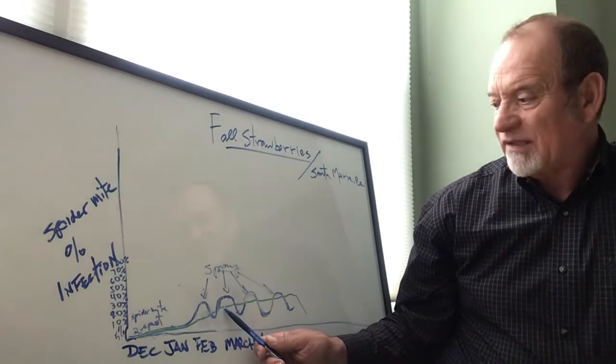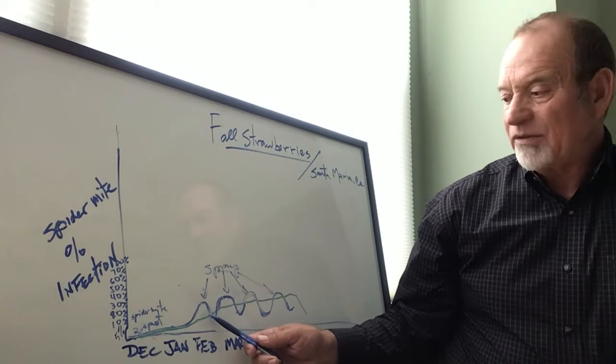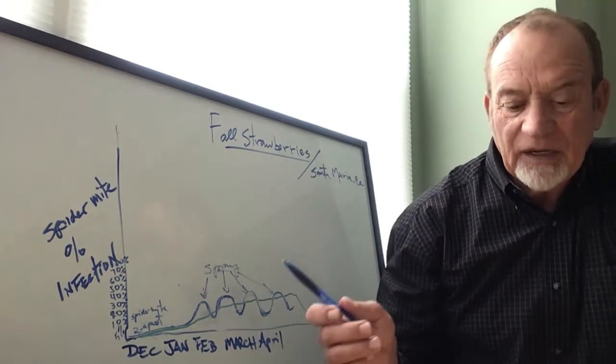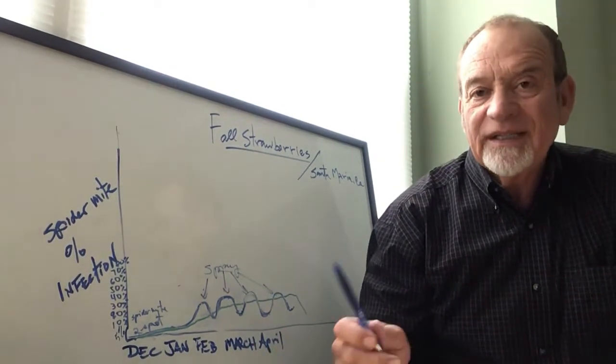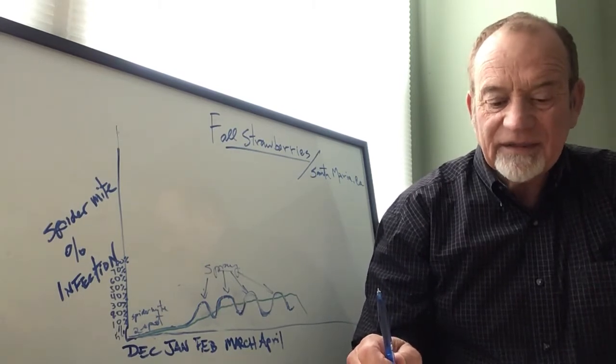But then the population keeps going up. In the meantime, the persimilis is still growing. At the same time we're trying to develop a good ratio between the persimilis and californicus, and that requires strong aggressive monitoring.